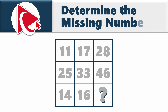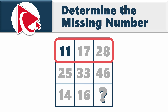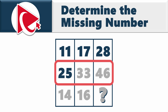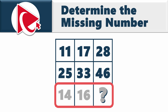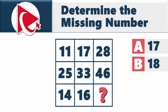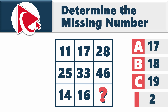You're presented with a 3×3 matrix. Each cell has numbers. In the first row: 11, 17, and 28. In the second row: 25, 33, and 46. In the third row: 14, 16, and the missing number. Select out of four choices: Choice A, 17; Choice B, 18; Choice C, 19; Choice D, 21.